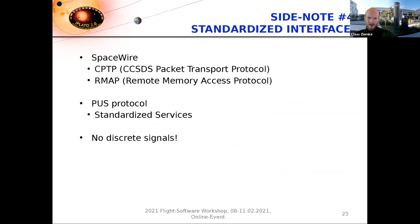A second way of dealing with this complexity is using standardized interfaces. We basically have only one type of electrical interface, which is SpaceWire, and for this we only use two different protocols: CCSDS Packet Transport Protocol (CCSTP) and EMAP. We also use the PUS protocol with standardized services, and we have no discrete signals or any legacy data buses in the payload.